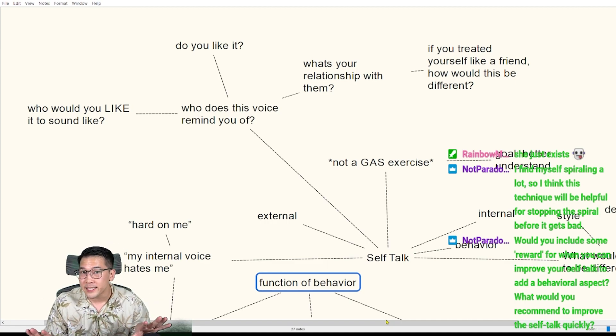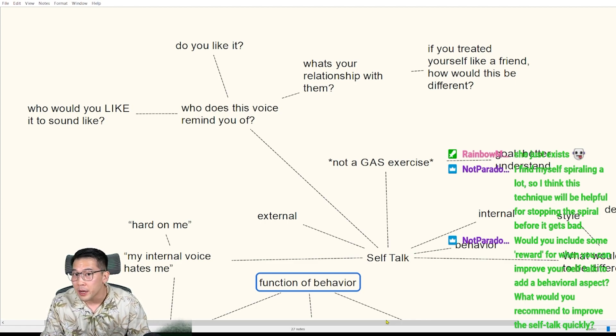When you're in a cool, calm, collected state and you can clearly think about these things, you can write them down, you can make a plan for yourself for when this does happen or when you do catch yourself using this type of self-talk.